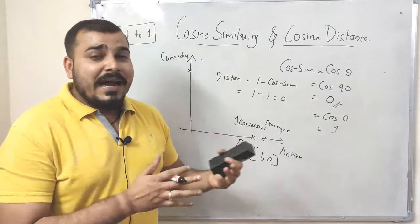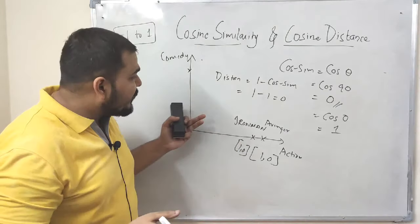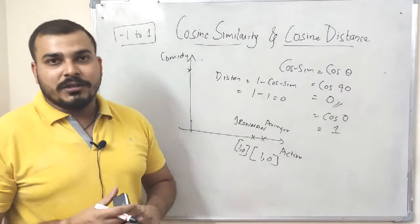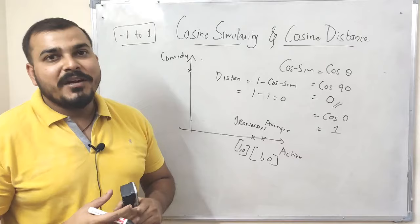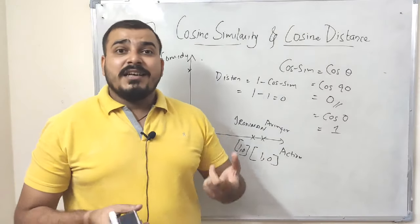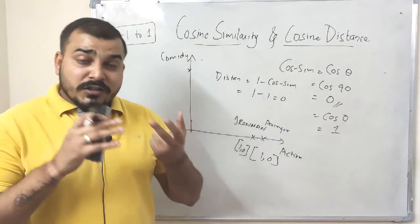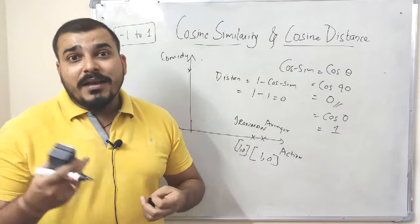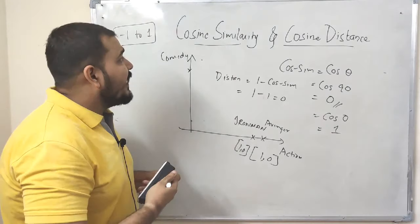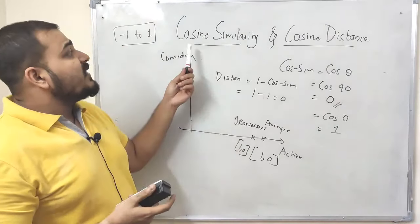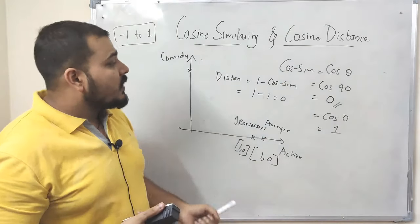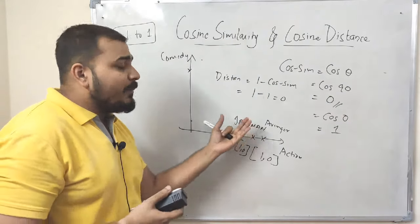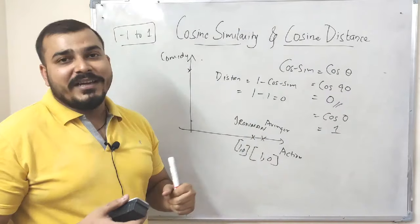That is why cosine similarity is heavily used in recommendation systems — not only for movies, but also for Amazon product recommendations and many other applications. There are other techniques as well, like Pearson correlation, but cosine similarity and cosine distance are among the most widely used for building recommendation systems.